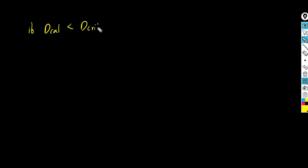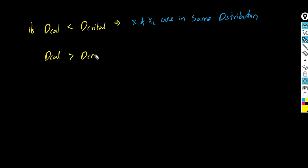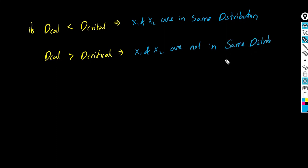Now let us check what happens based on the values. If D_calculated is less than D_critical, then it tells us that the two distributions are the same — x1 and x2 follow the same distribution. If D_calculated is greater than D_critical, then x1 and x2 are not in the same distribution. That means, since we considered x1 as a Gaussian distribution, x2 would not be a Gaussian distribution.